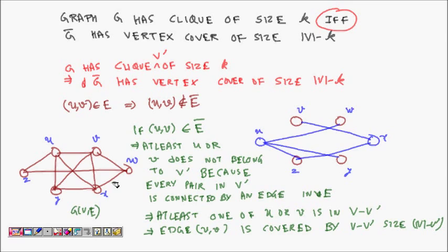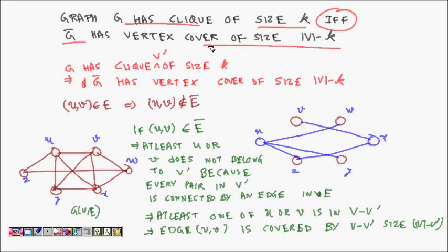Now we show why this transformation is correct. The claim is: graph G has a clique of size K if and only if G-bar has a vertex cover of size |V| minus K. We need to prove both directions. Let's first assume G has a clique of size K — that is, G has a subset V-dash which is a clique of size K. We want to show that G-bar will have a vertex cover of size |V| minus K.